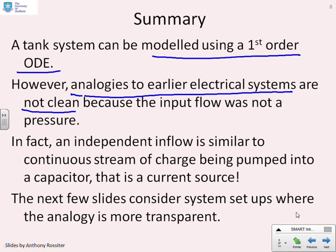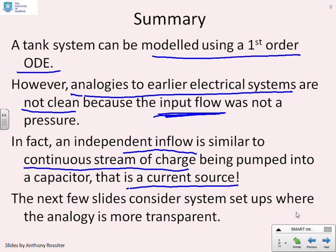And why is that? Because here the input flow was not a pressure. If you look at the equation for a pipe, we said the flow was driven by a pressure difference. So what we expect as the input is a pressure. But we didn't do that. The input we used here was an independent inflow. And if you were to go to an electrical system, that would be a bit like having a continuous stream of charge being pumped into a capacitor, i.e. a current source. So the input we've used here was equivalent to a current source, not a voltage source.